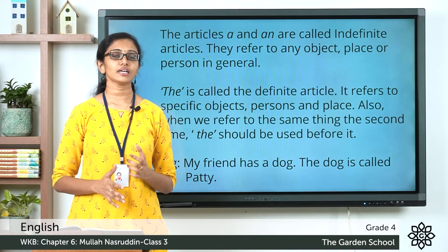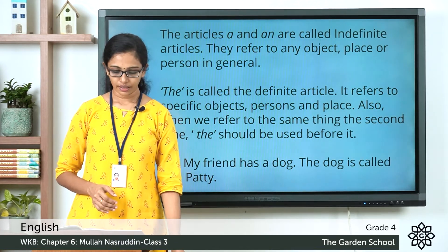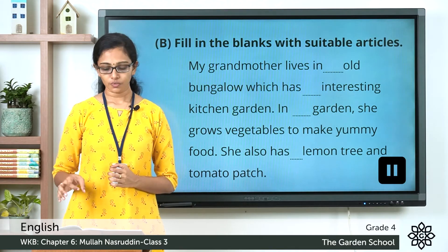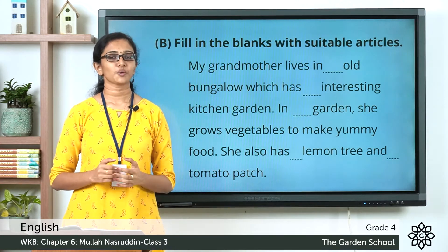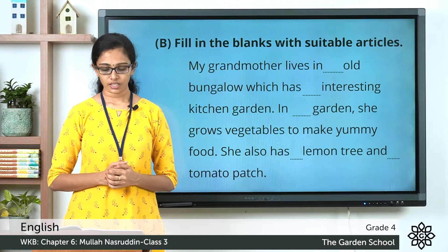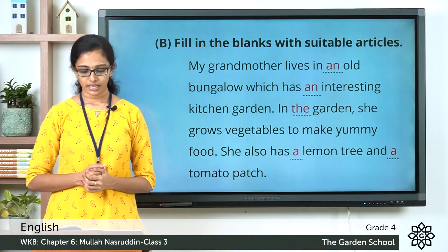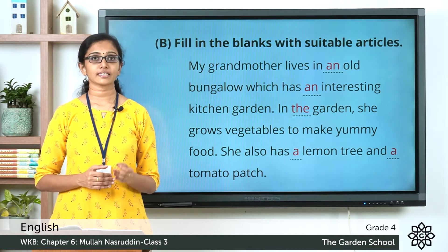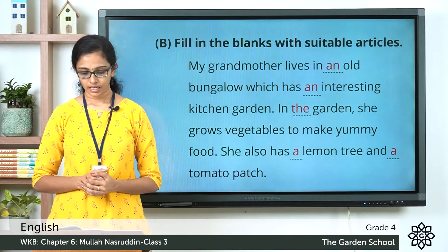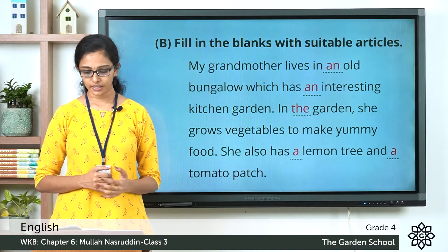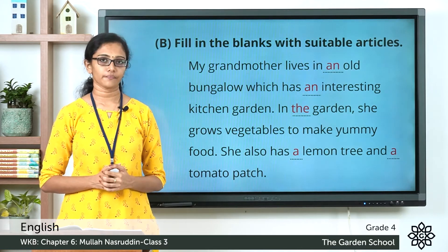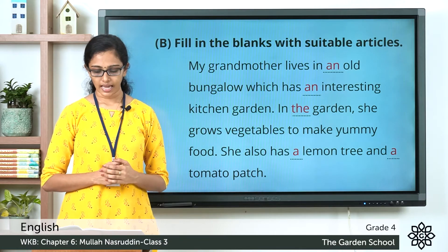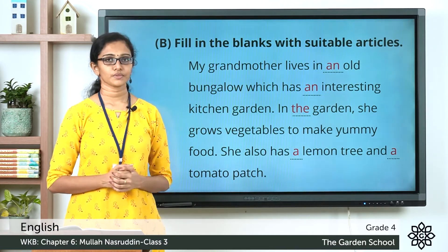With this in mind, you have to do the next two sections of exercises. Section B — fill in the blanks with suitable articles. Please pause this video, fill in the blanks, and then come back. Now let's see the answers. My grandmother lives in an old bungalow which has an interesting kitchen garden. In the garden she grows vegetables like spinach, cabbage, and cucumber. She uses the vegetables to make yummy food. She also has a lemon tree and a tomato patch.